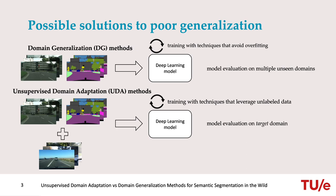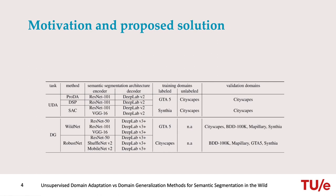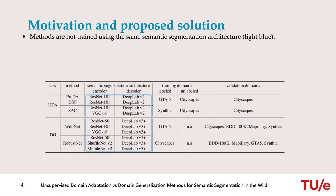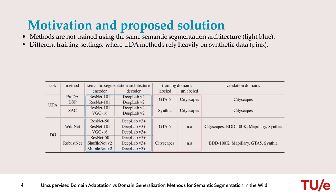Nowadays, it is unclear which of these types of methods achieves better generalization, because several factors impede a fair comparison between the two. First, these methods are not trained using the same semantic segmentation architecture. Second, their training setting is different, where unsupervised domain adaptation methods rely heavily on synthetic data. And finally, unsupervised domain adaptation methods are not evaluated for generalization, as they only validate the trained model on an unseen portion of the target domain.